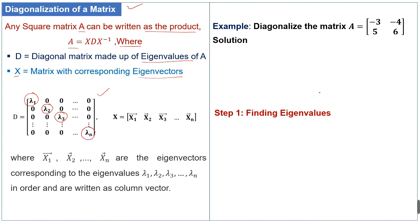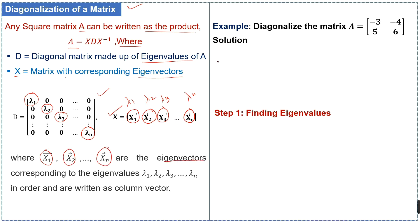The matrix X contains the eigenvectors corresponding to the eigenvalues λ₁, λ₂, λ₃, up to λₙ. So X₁, X₂, up to Xₙ are the eigenvectors corresponding to the eigenvalues λ₁, λ₂, λ₃, and λₙ in order, and they are written as column vectors.